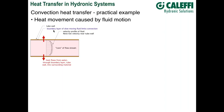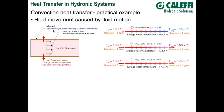The thicker the boundary layer, the lower the heat transfer coefficient. If the boundary layer can be made thinner, you get higher rates of heat transfer. For a given fluid and viscosity, what controls the thickness of the boundary layer is basically the speed. The faster the fluid moves through that tube, the thinner the boundary layer is, and hence the better the rate of heat transfer.